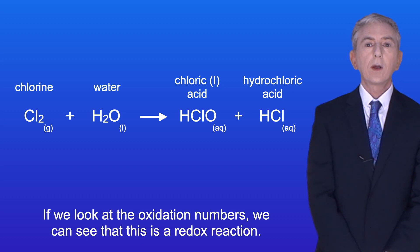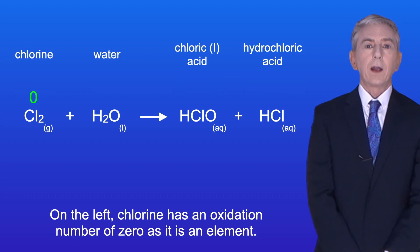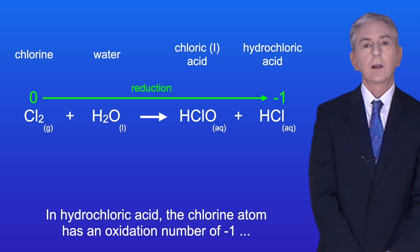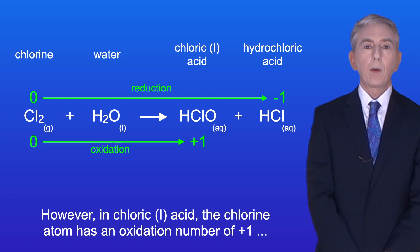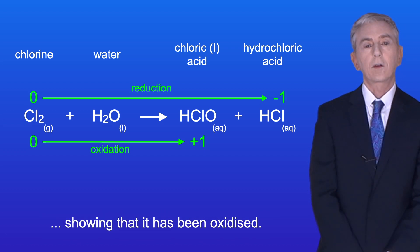Now if we look at the oxidation numbers we can see that this is a redox reaction. On the left chlorine has an oxidation number of zero as it's an element. In hydrochloric acid the chlorine atom has an oxidation number of minus one showing that it's been reduced. However in chloric 1 acid the chlorine atom has an oxidation number of plus one showing that it's been oxidized.